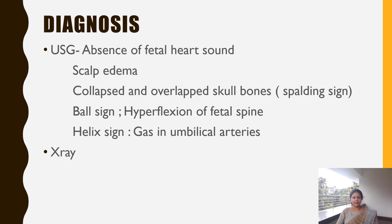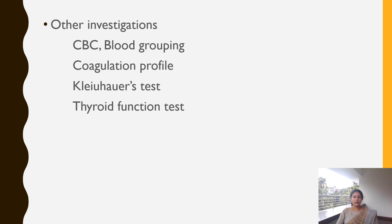These findings can also be seen on X-ray and help confirm the diagnosis. Other investigations include CBC, blood grouping, and coagulation profile — all coagulation parameters should be assessed. The Coombs test is performed to detect the presence of antibodies in maternal blood, particularly in cases of RH incompatibility. Thyroid function tests of the mother should also be performed, as thyroid disorders can lead to intrauterine death.